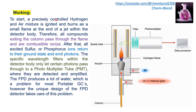For working of the FPD, a hydrogen flame is produced by the ignition of a hydrogen and air mixture. The column effluent containing sulfur and phosphorus moves towards the flame and combustively ionizes, moving sulfur and phosphorus compounds to the excited state. When these return to the ground state, they emit characteristic photons. Specific filters allow these photons to reach the photomultiplier tube, where they are amplified and detected. A drawback of this detector is that it produces a lot of water, which is problematic for GC detectors. However, newer FPD designs minimize or eliminate this problem.